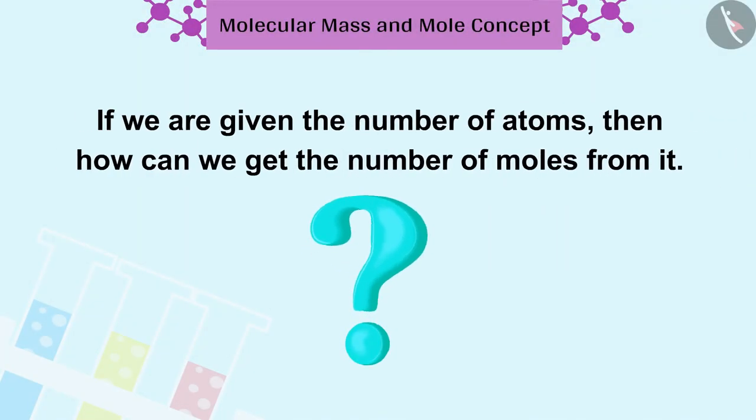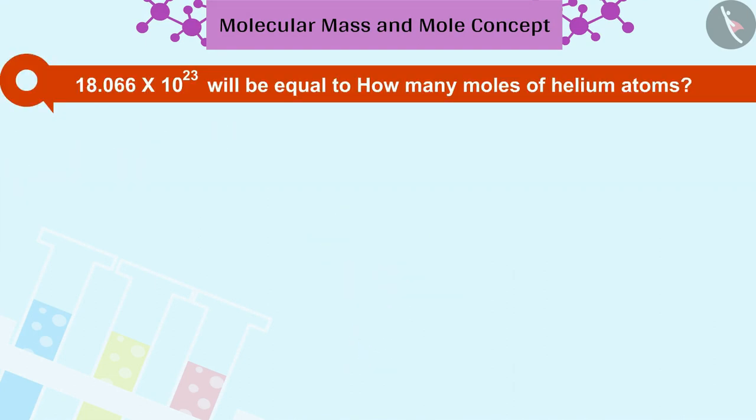Now, let's see if we are given the number of atoms, then how can we get the number of mole atoms. 18.066 into 10 raised to 23 will be equal to how many moles of helium atoms?